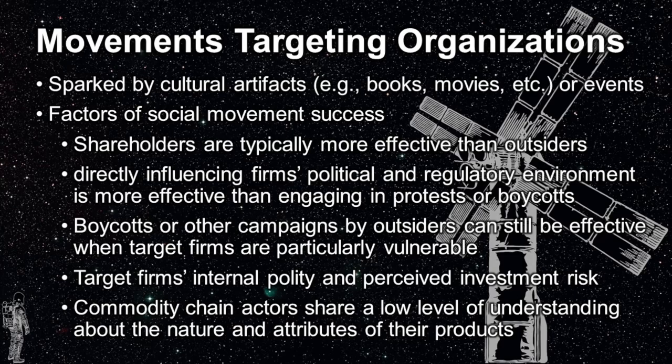The success of social movements is also enhanced if change agents target the internal polity, such as the status of the firm's executives, undermining their unity or increasing the perceived risk of investing in the firm. Finally, if the firm's upstream and downstream chain actors have a low level of understanding about the nature and attributes of the products being protested, then the social movement can have a higher chance of success. Obviously, this tactic is more successful for firms and industries that are not vertically integrated.